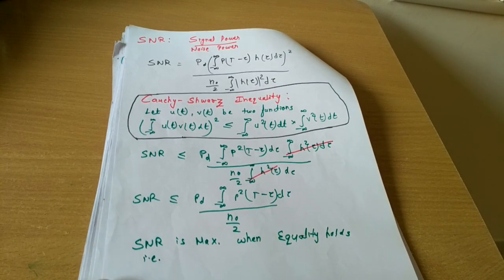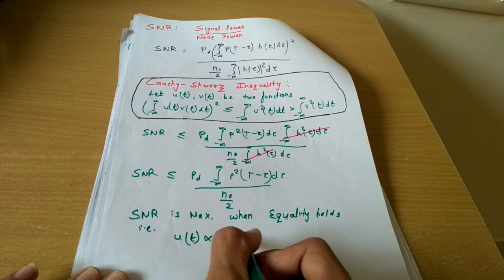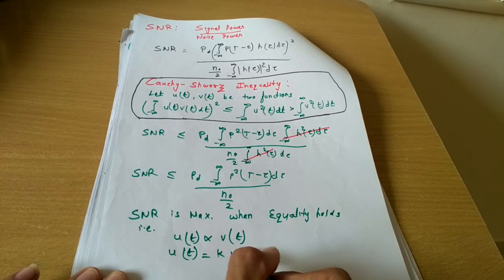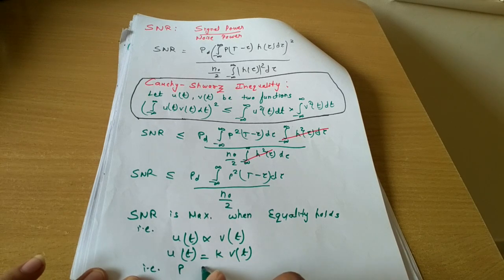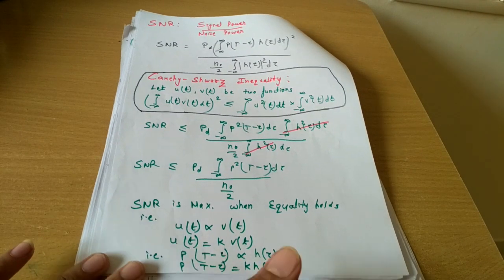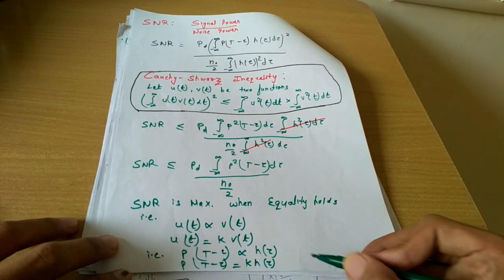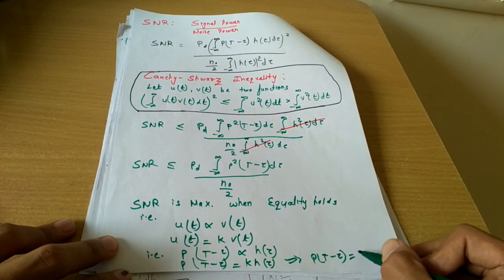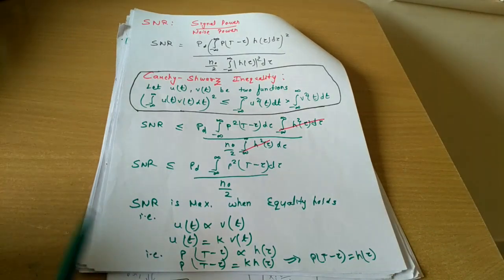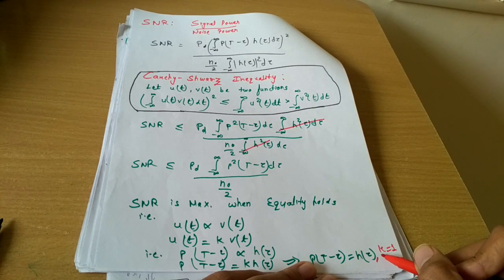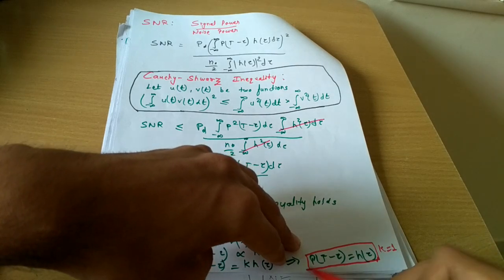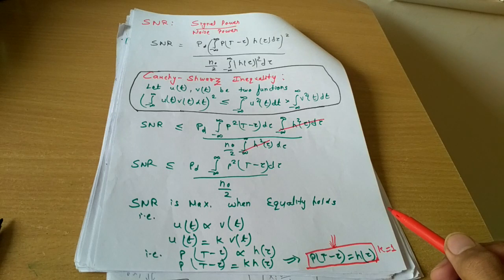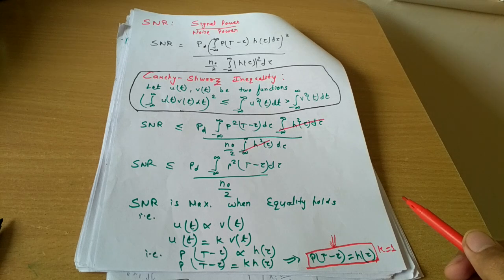The equality condition in Cauchy-Schwarz holds when u(t) is proportional to v(t), i.e., u(t) = k·v(t). Applying this to our problem, p(t - τ) is proportional to h(τ), so p(t - τ) = k·h(τ). Assuming k = 1 without loss of generality, we get p(t - τ) = h(τ). This is the condition for the matched filter.